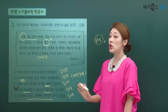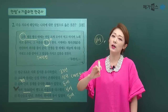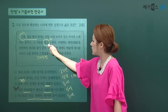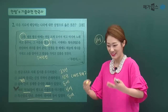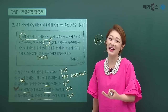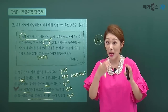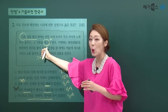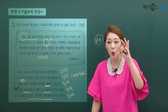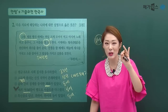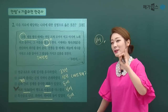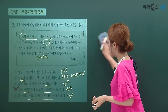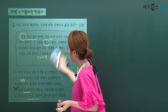초기 철기 시대 특징과 관련된 문제들은 거의 매번 출제되고 있어요. 제천행사를 정리해 드리면, 부여는 영고, 고구려는 동맹, 동예는 무천, 삼한은 5월제·10월제가 있었습니다. 계절제까지 정리해 두시면 되겠습니다.